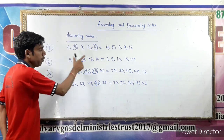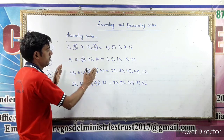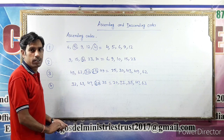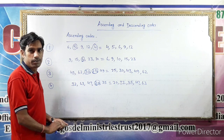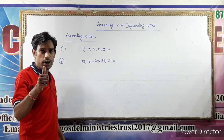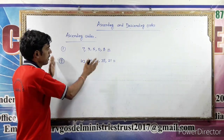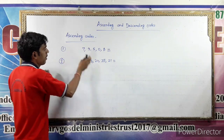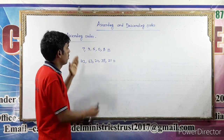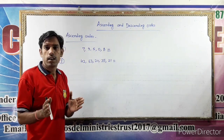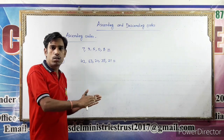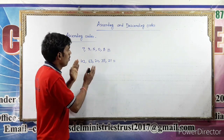Students, look at the whiteboard and see how to find the ascending order. More examples. Ascending order means when we arrange the numbers from the smallest to the greatest number.